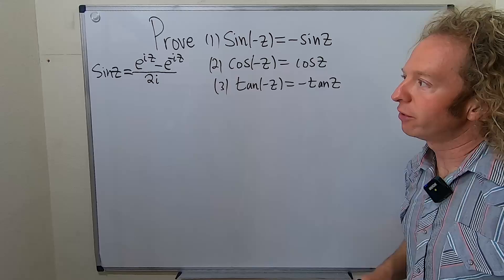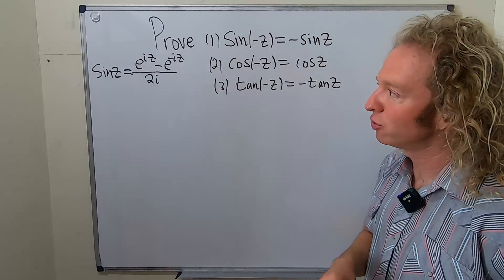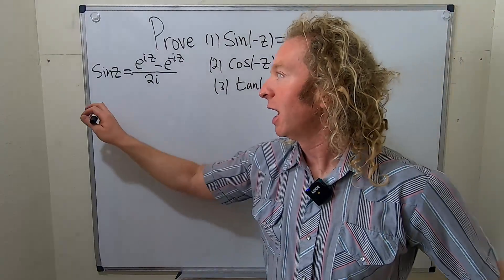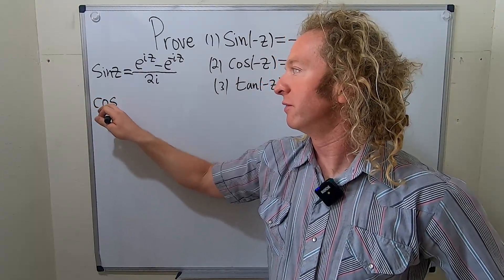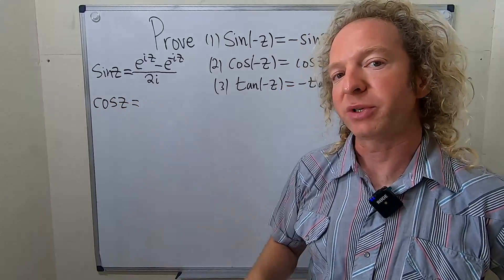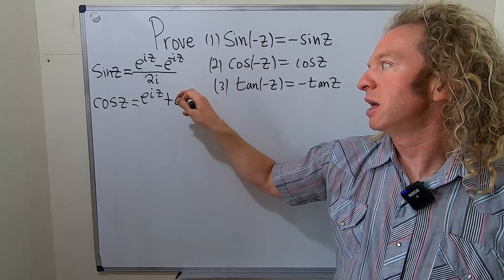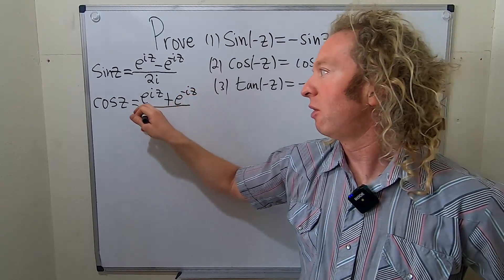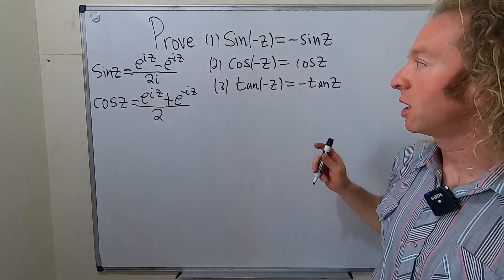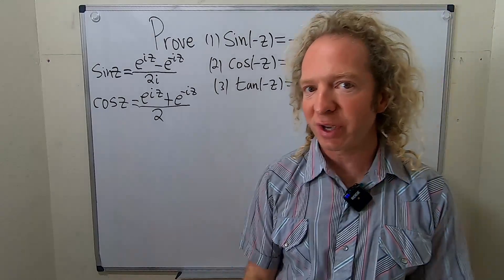That's the definition for the complex valued sine function. And then the cosine of z is e to the iz plus e to the negative iz all over 2. That's the complex valued cosine function.